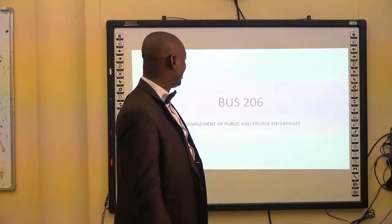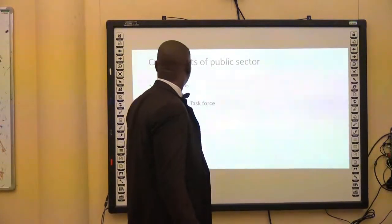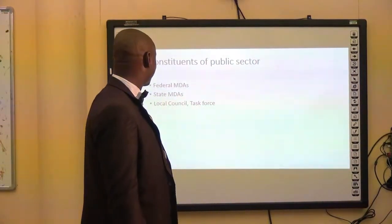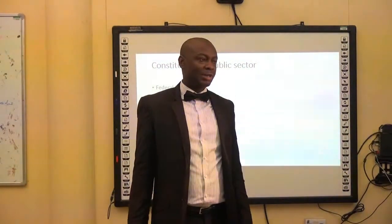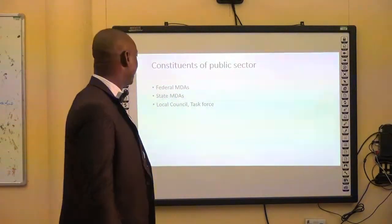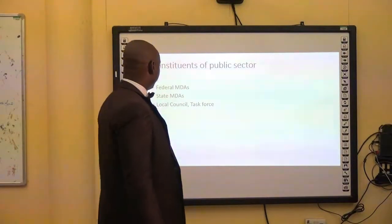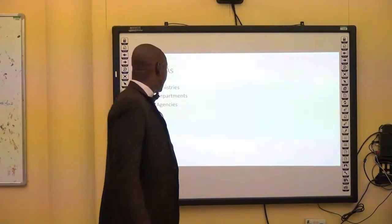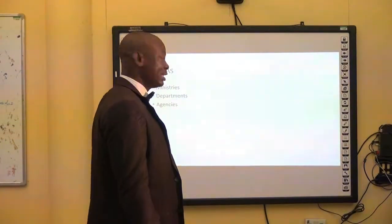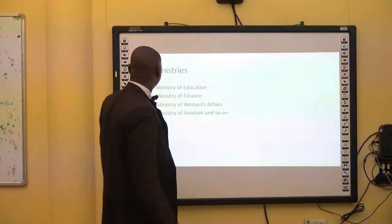Today we are looking at management of public and private enterprise. When we are talking about management of public and private enterprise, we want to look first at the public sector. When we talk about the public sector, we are talking about a sector that has constituents. The constituents of the public sector include federal, state, and local council. At the federal level, we have MDAs. MDA is an acronym representing Ministries, Departments, and Agencies. So anytime you come across an MDA in learning or competition, you will remember that we are talking about Ministries, Departments, and Agencies.